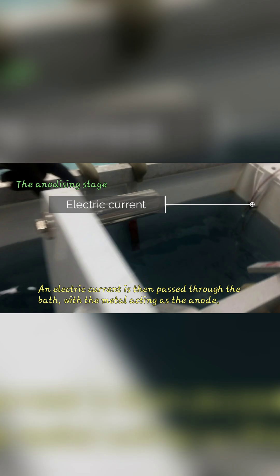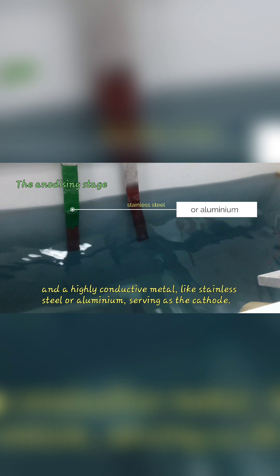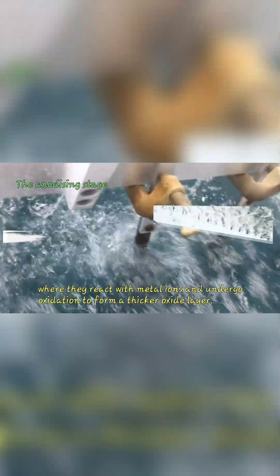An electric current is then passed through the bath, with the metal acting as the anode, and a highly conductive metal like stainless steel or aluminium serving as the cathode. This process causes oxygen ions to migrate to the surface of the metal, where they react with metal ions and undergo oxidation to form a thicker oxide layer.